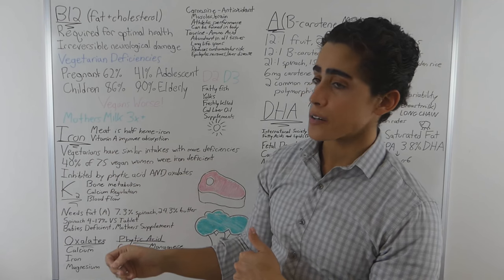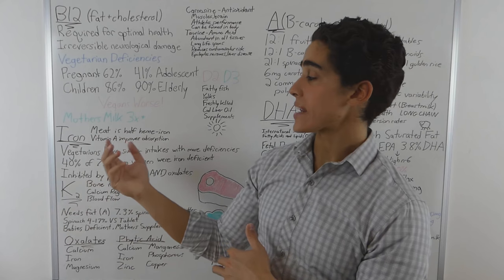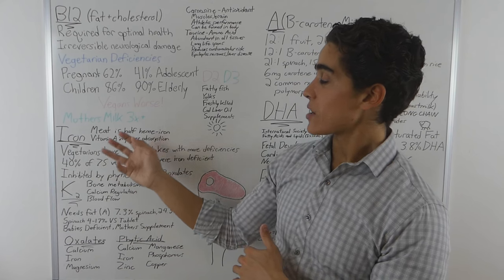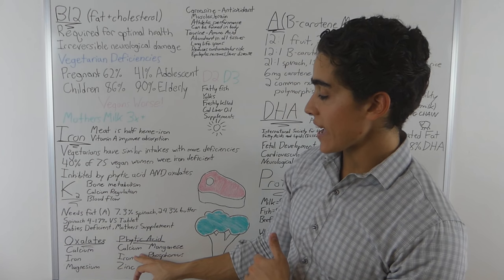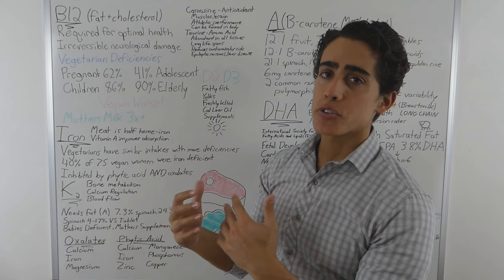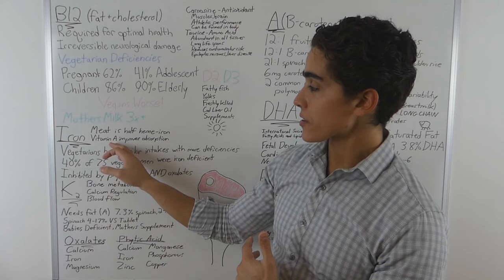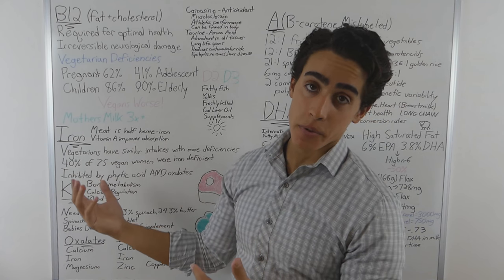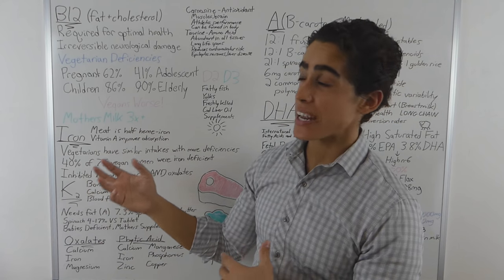Vitamin A improves absorption of iron. This ties in because since these people on plant-based diets are getting the plant form of vitamin A, they don't have as much vitamin A to fight against the oxalates and the phytic acid, the anti-nutrients, the things that inhibit nutrient absorption that are contained in plant foods. These anti-nutrients can be countered by high vitamin A intake to some degree, but on a vegan diet your vitamin A intake is inhibited as well.